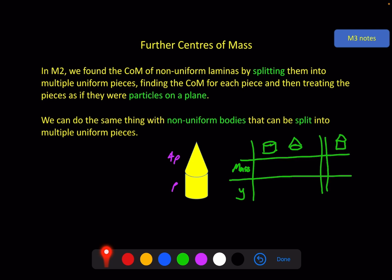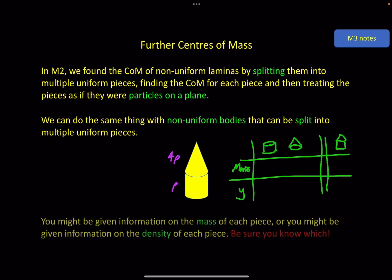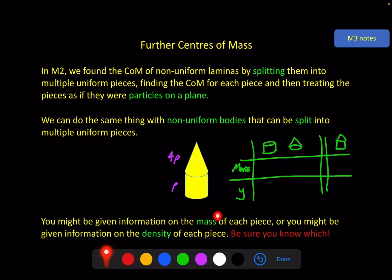One important difference from M2 is that here you might be given information on the mass, or you might be given information on the density. You've got to be really careful which one you've been given. If you've been given mass — say the cone is four times the mass of the cylinder — you can put the relative mass in very easily: M and 4M. But if you've been given density, then you have to multiply by the volume of each piece to get the relative mass. Be clear: if it's mass, put it straight in; if it's density, multiply by volume.